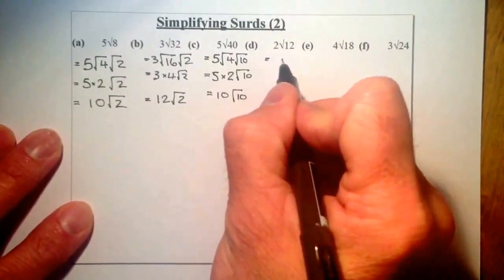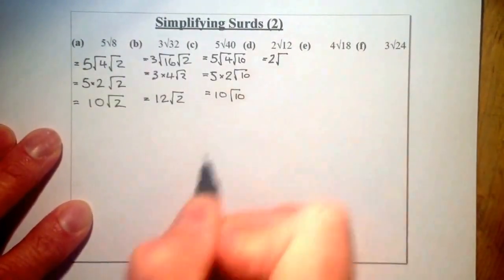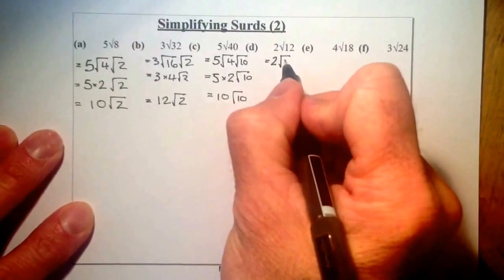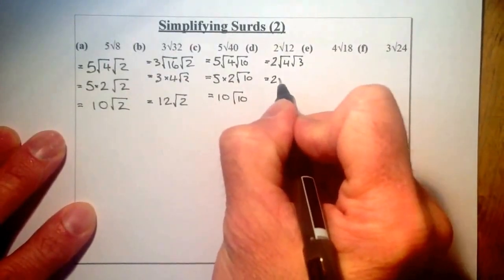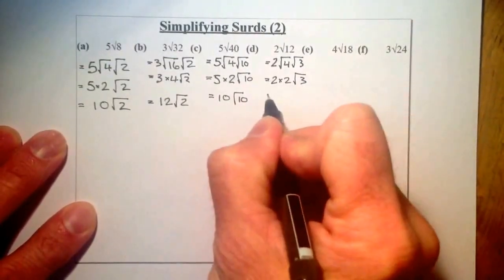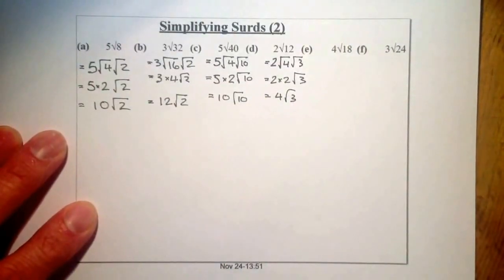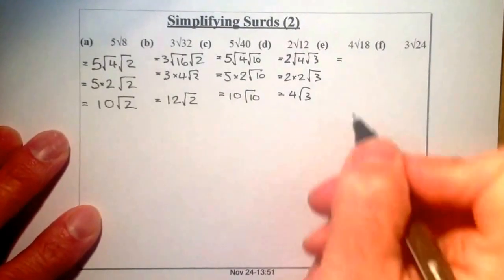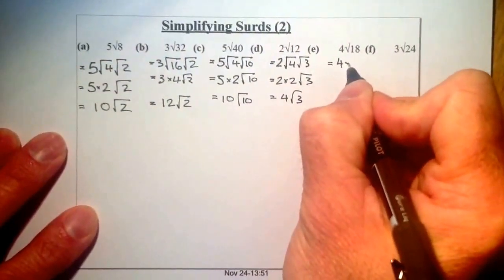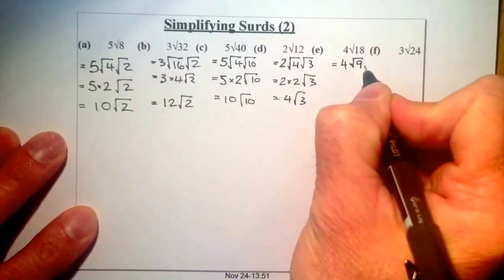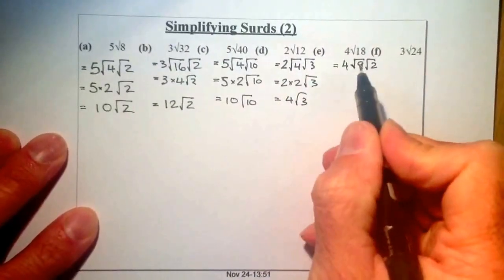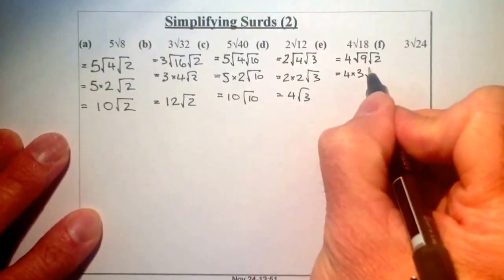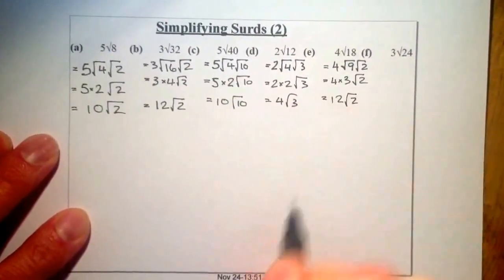For 2 root 12: the roots I'm going to use must be square numbers, so I can't use 6 and 2 — I'll use 4 and 3. That gives 2 times 2 root 3, which is 4 root 3. For 4 root 18: I'll use root 9 and root 2, since 9 times 2 gives 18. The square root of 9 is 3, then 4 times 3 gives 12 root 2.